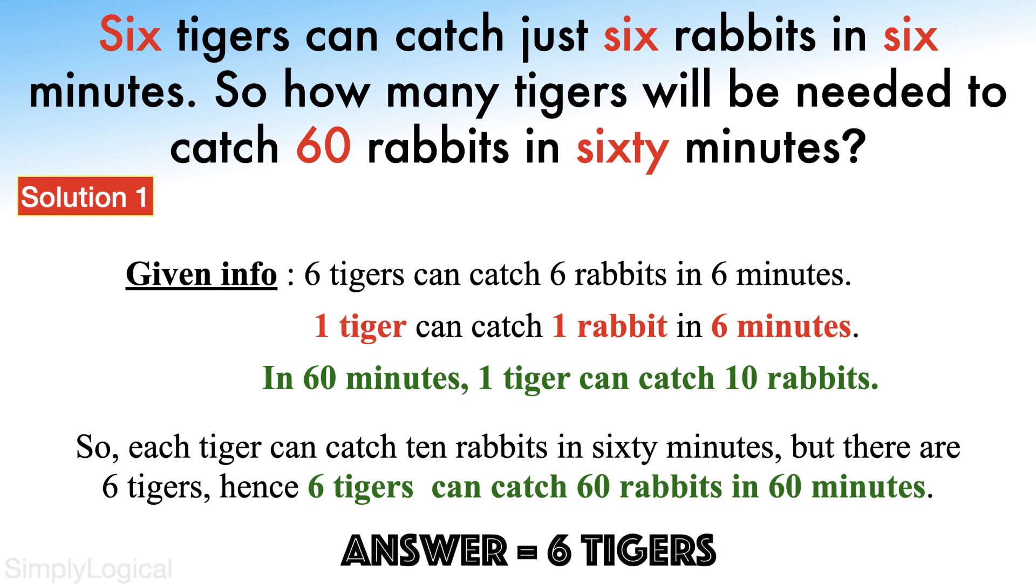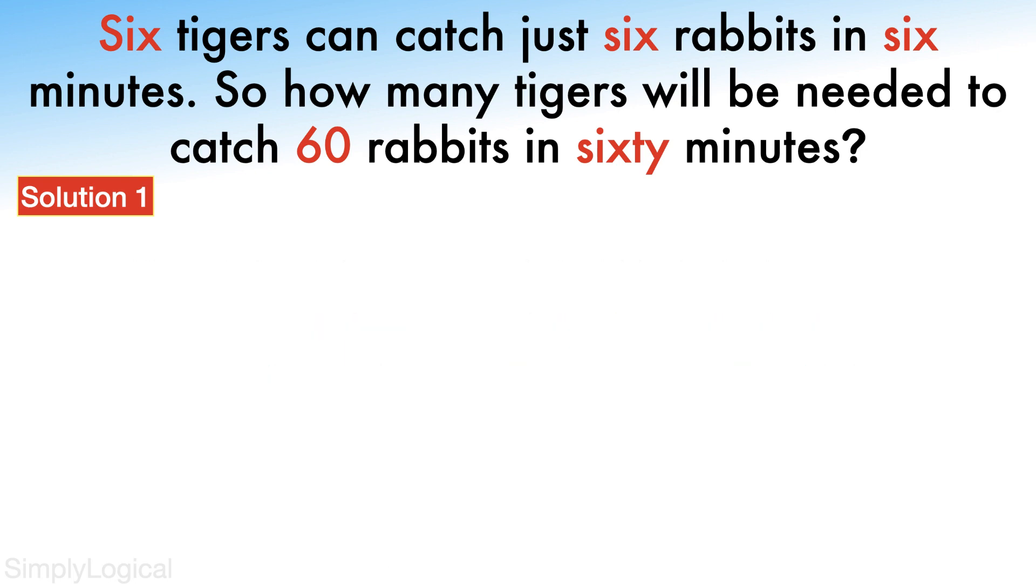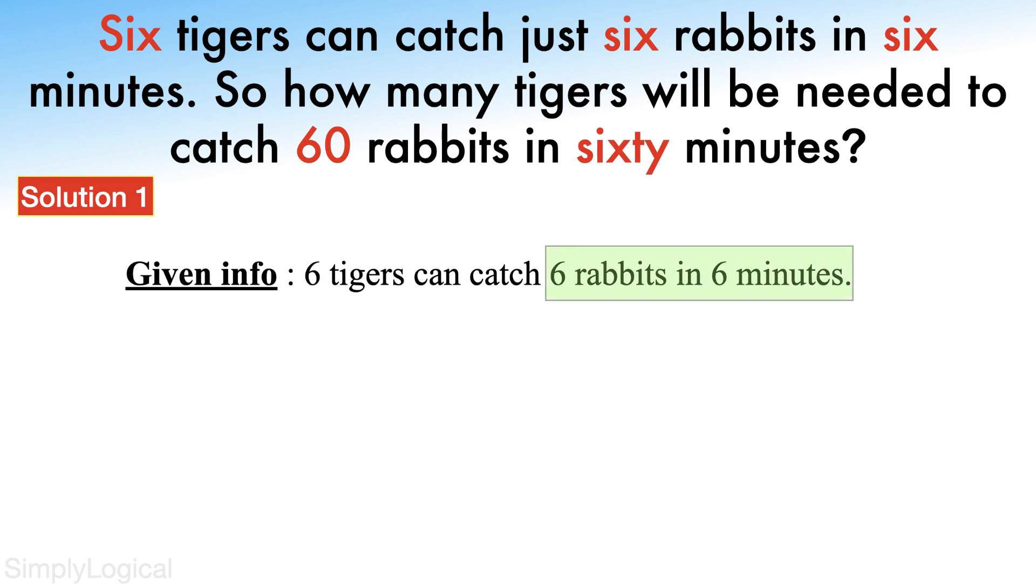So this is the straightforward approach. There is an alternative method. Consider again the given information: six tigers can catch just six rabbits in six minutes. It is said in the question that six tigers can catch six rabbits in six minutes. If you multiply it by 10,